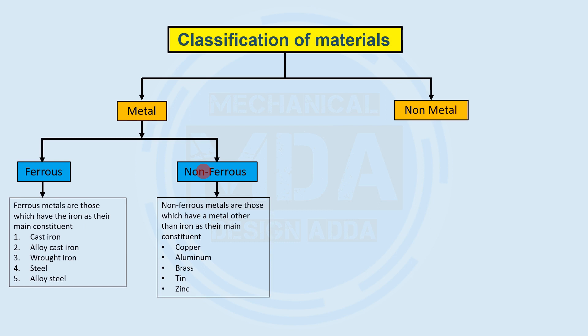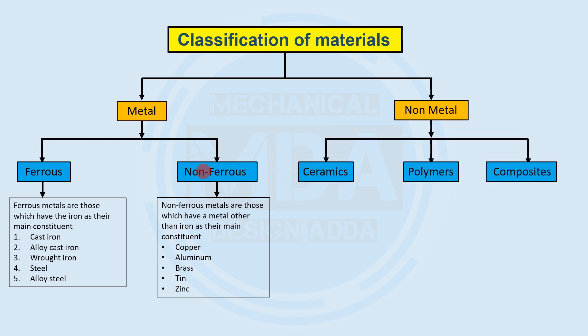Non-ferrous materials are those materials which have a metal other than iron as their main constituent. Examples of non-ferrous materials include copper, aluminum, brass, tin, and zinc.